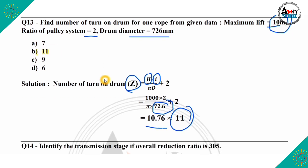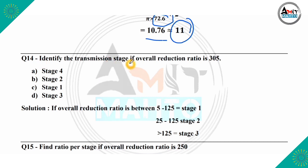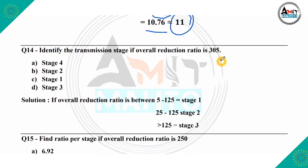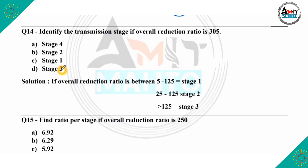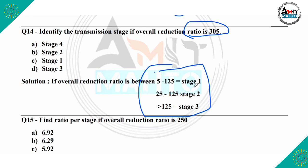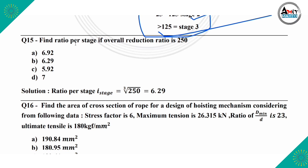The next question: identify the transmission stage if the overall reduction ratio is 305. The options are 4 stages, 2 stages, 1 stage, or 3 stages. According to the table, if the ratio is between 5 and 125, it is stage 1; between 25 and 125 it is stage 2; and if greater than 125, it is stage 3. Since 305 is greater than 125, the correct answer is stage 3, which is option D.